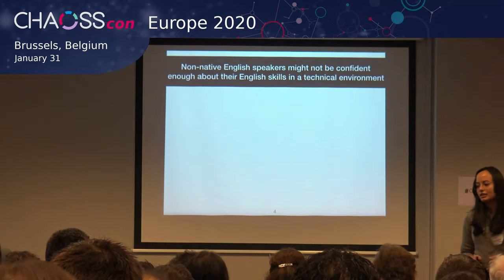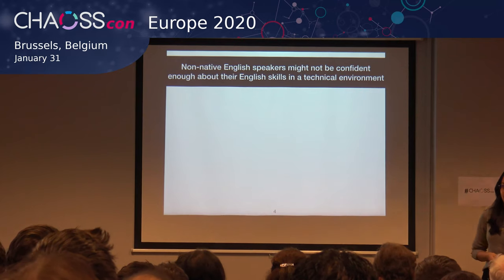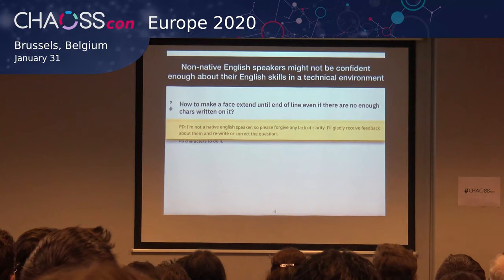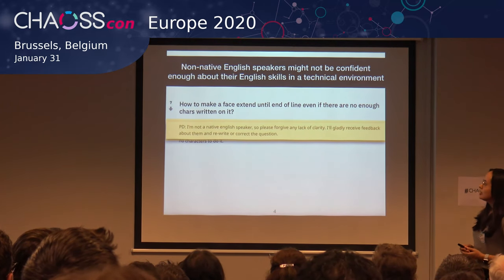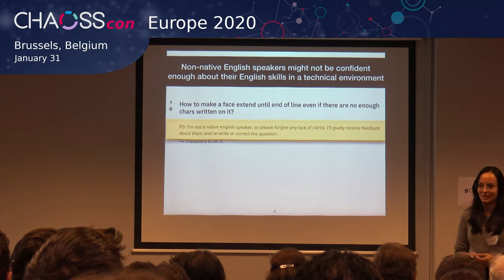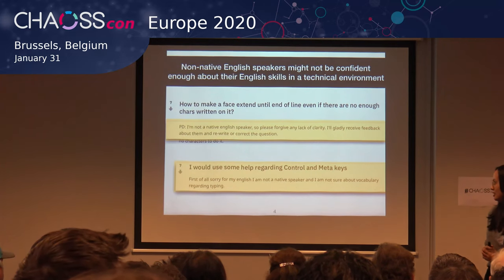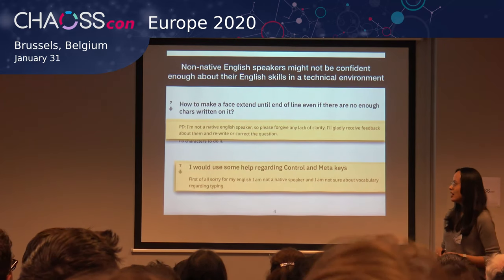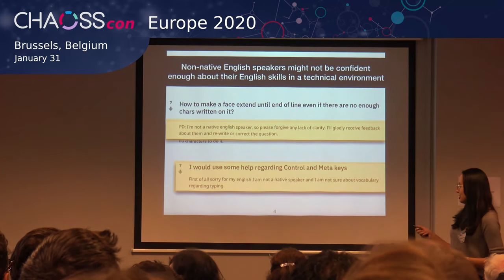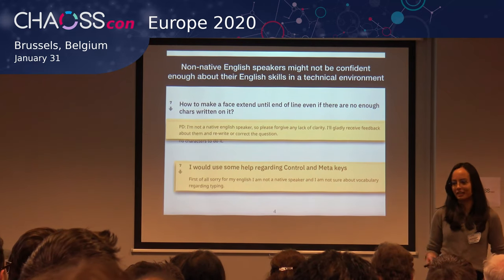It seems that non-native English speakers might not be confident enough when they're in a very technical environment. For example, someone was asking a question and said, 'I'm not a native English speaker, so please forgive me and I'm glad to receive any feedback.' And someone else said in the first line of his post, 'First of all, sorry for my English — I'm not a native English speaker and I'm not sure about the vocabulary regarding typing, so what I'm writing might not be clear to you.'